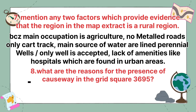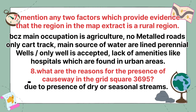What are the reasons for the presence of a causeway in grid square 3695? The reason is mainly due to the presence of dry or seasonal streams.